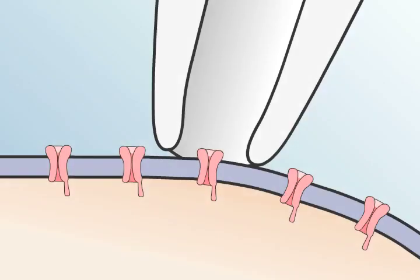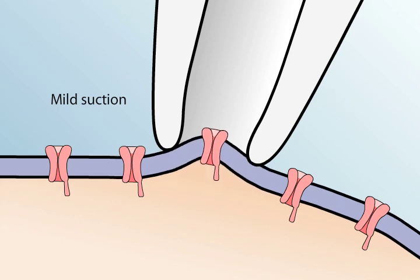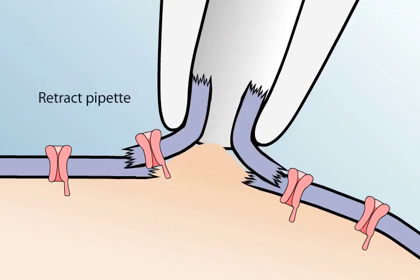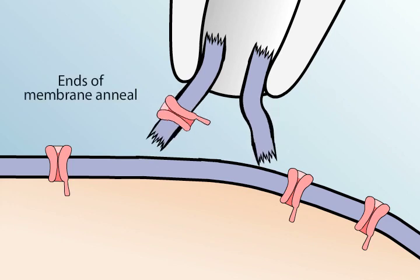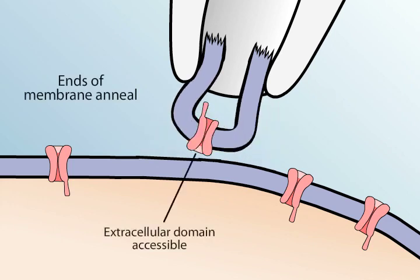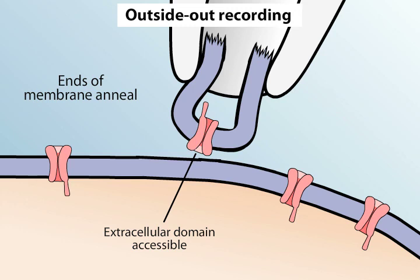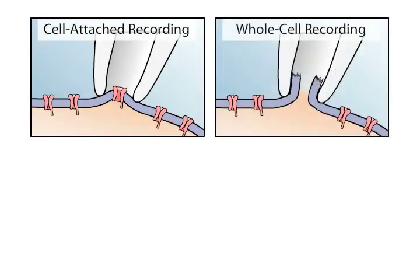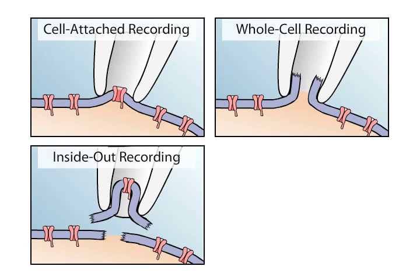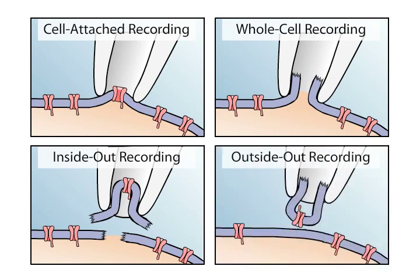Alternatively, if the pipette is retracted while it's in the whole cell configuration, a membrane patch is produced that has its extracellular surface exposed. This arrangement, called the outside-out recording configuration, is optimal for studying how channel activity is influenced by extracellular chemical signals, such as neurotransmitters. This range of possible configurations makes the patch clamp method an unusually versatile technique for studies of ion channel function.